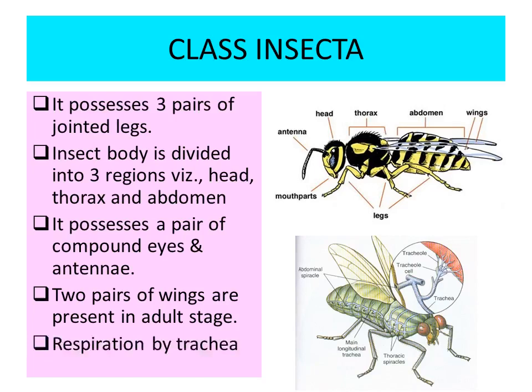Another very important characteristic feature of Insecta is respiration — it is with the help of trachea. You can see the network of tubules in the insect which are the trachea, which open through the spiracles. So class Insecta includes organisms with three pairs of jointed legs, two pairs of wings, body divisible into head, thorax and abdomen, having a pair of compound eyes and antennae.